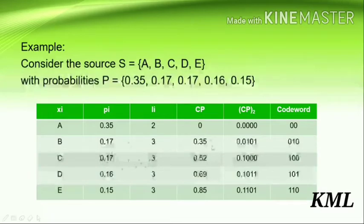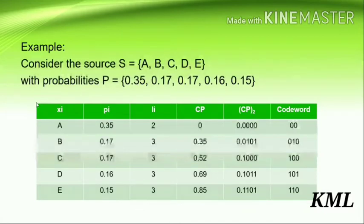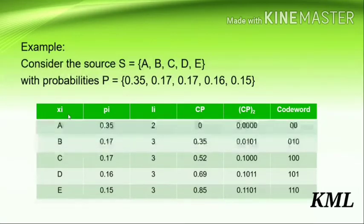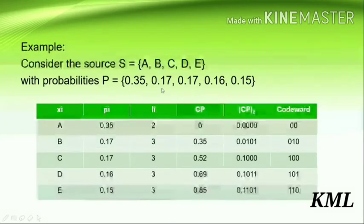Consider the source S = {a, b, c, d, e} with probabilities 0.35, 0.17, 0.17, 0.16, and 0.15. Construct a table with six columns: xi (source letters), Pi (probabilities), Li (length), CP (cumulative probability), CP in base 2 (binary), and the code word.